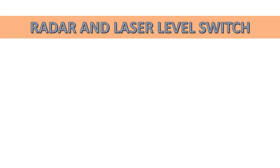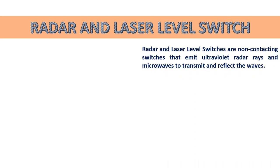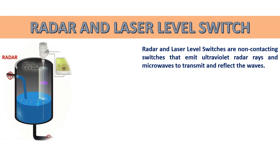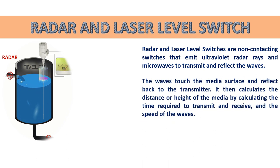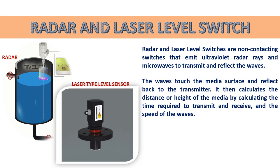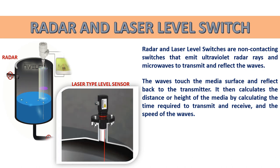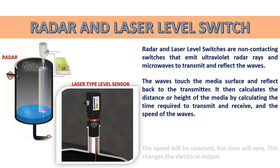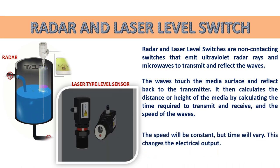Radar and laser level switches are non-contacting switches that emit radar rays and microwaves to transmit and reflect waves. The waves touch the media surface and reflect back to the transmitter. The device then calculates the distance or height of the media by measuring the time required to transmit and receive the waves and the speed of those waves. The speed remains constant, but the time varies, and this changes the electrical output.